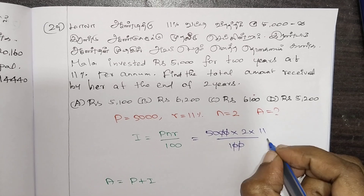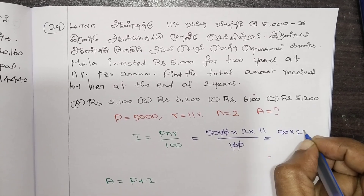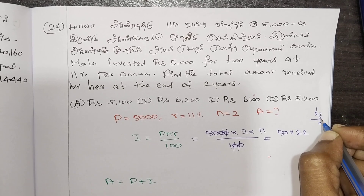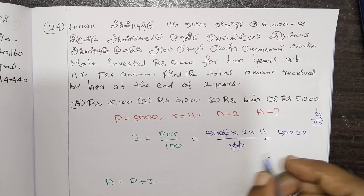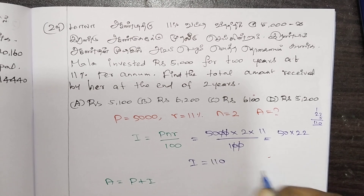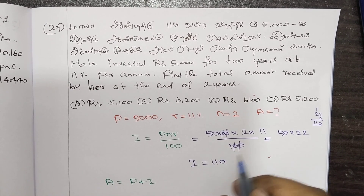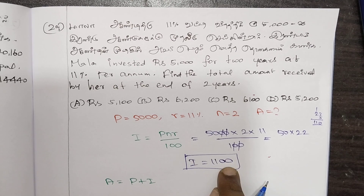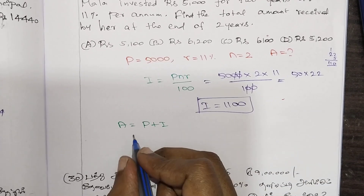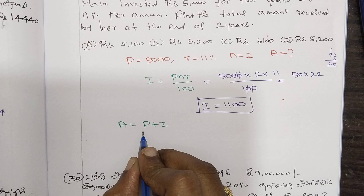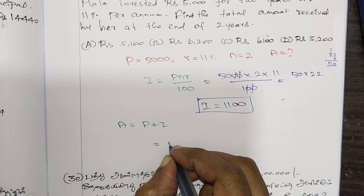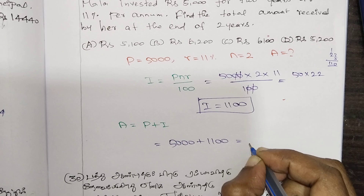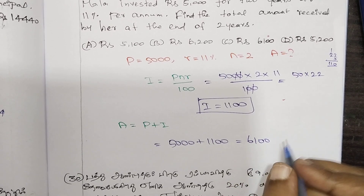Let's say P is equal to a given value and N times R equals 18. Solving, we get 50 equal to 18 and then A equals P plus I, which gives us A equal to the final answer.